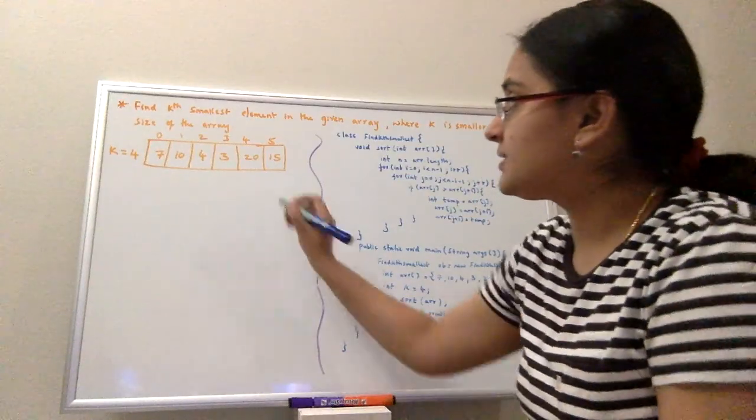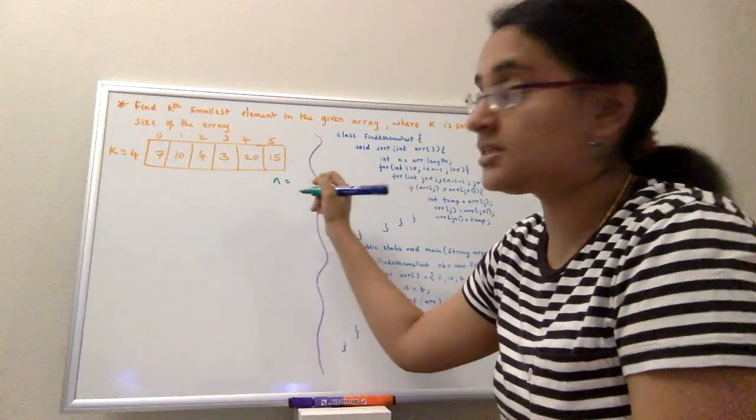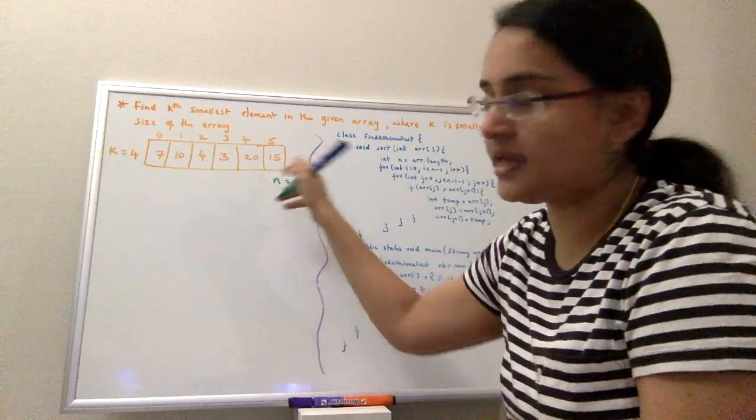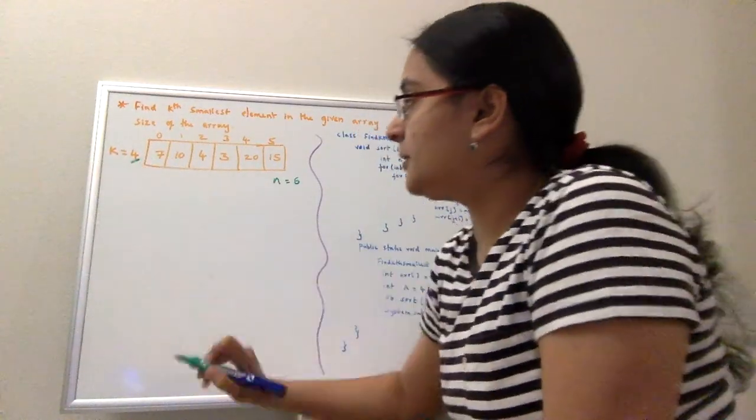In this example, I'll consider n to store the size, and n is 6 because there are 6 elements. So I want to find the fourth smallest element in this array.